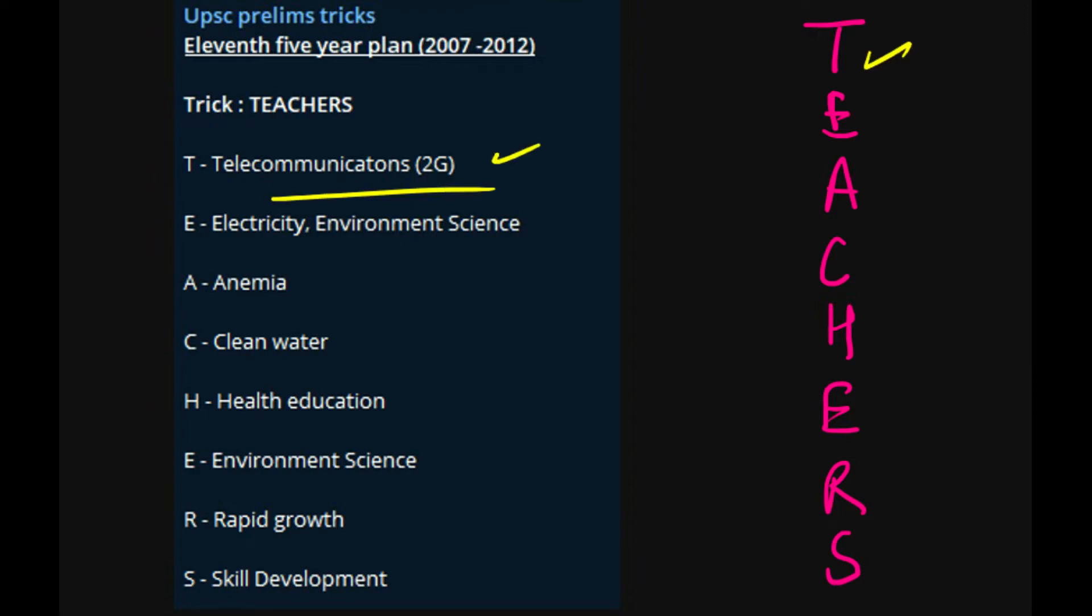E for Electricity and Environmental Science - focus on electricity and environmental science. A for Anemia - anemia control was targeted. C for Clean Water.